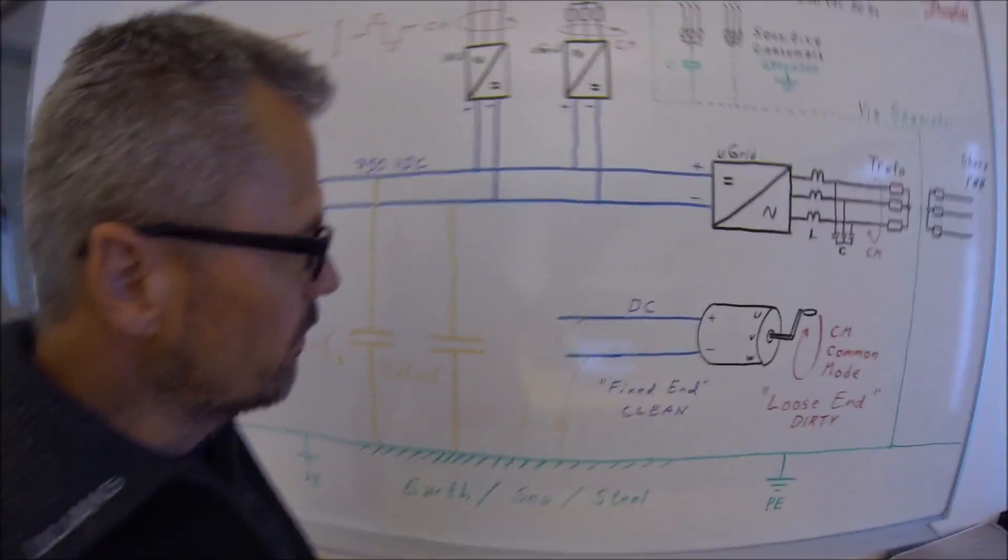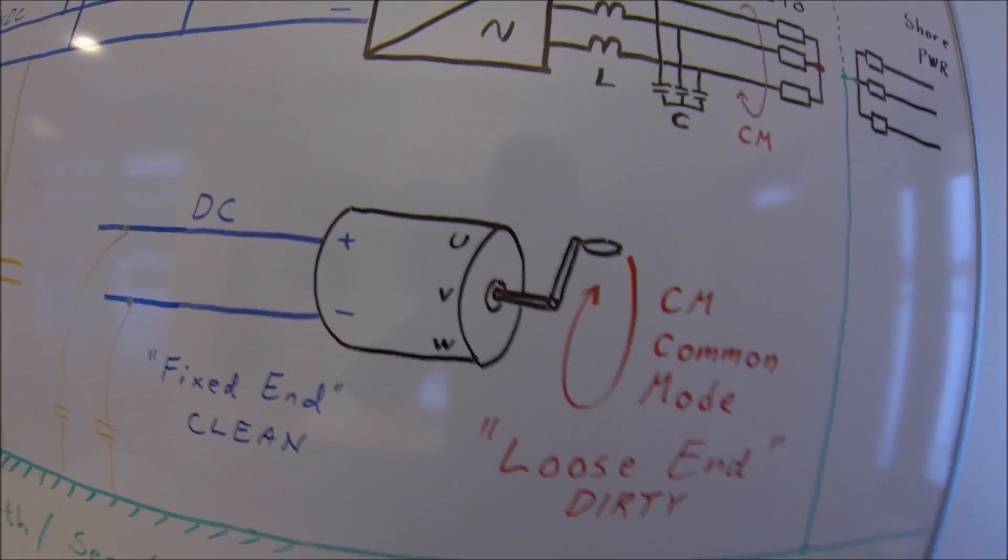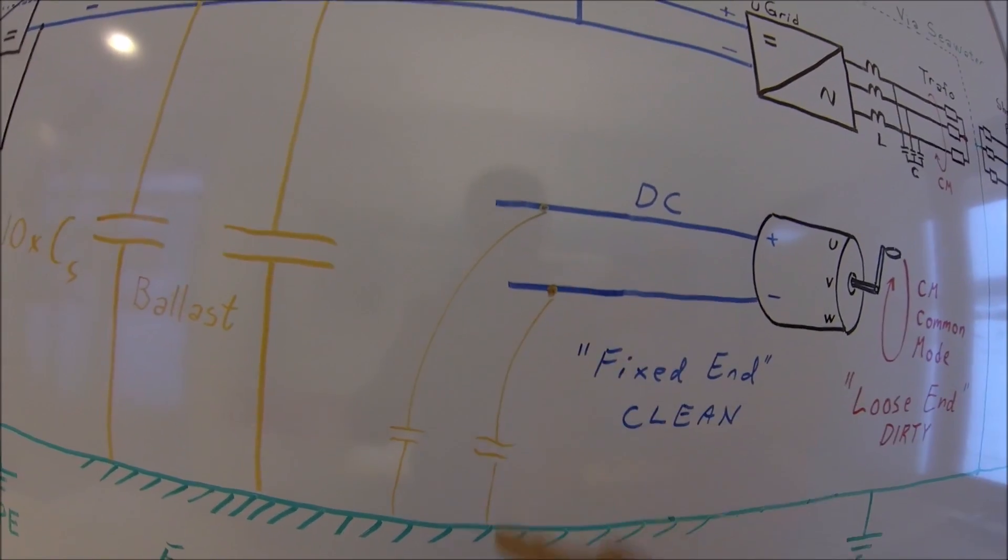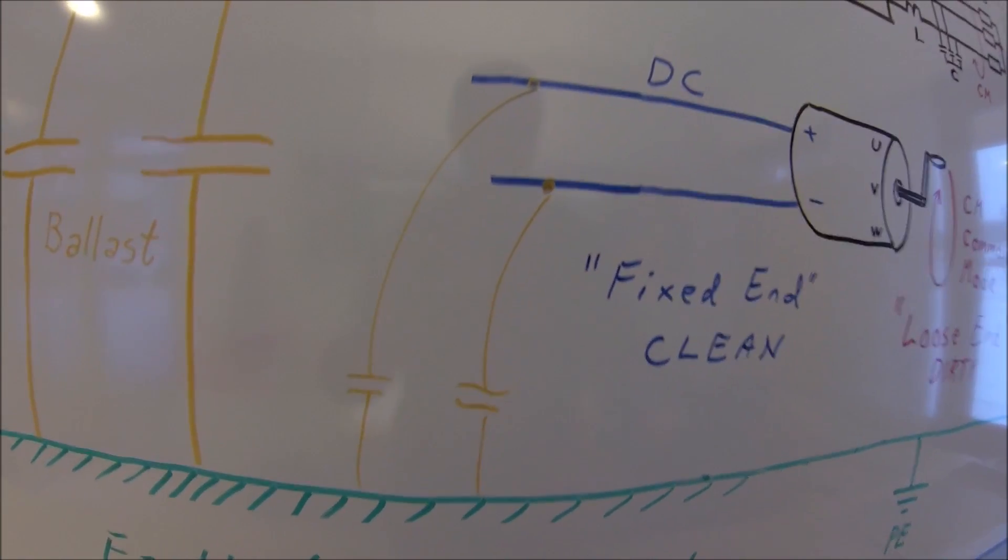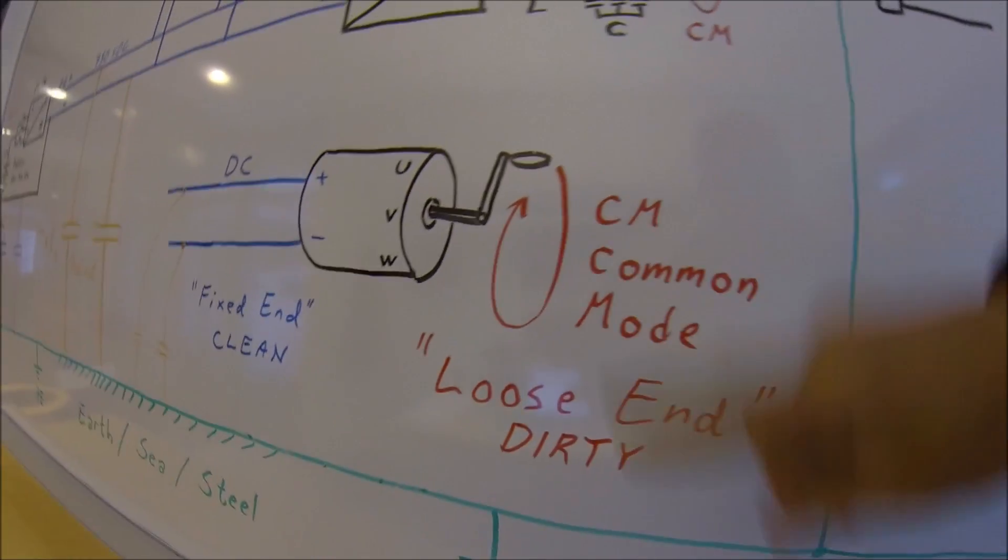In summary, what we have done now, if you look at this model of common mode, we actually have taken our DC bus and connected it with a capacitive connection to the ship steel. So that we are stabilizing the DC voltage and we have a loose end which is dirty.